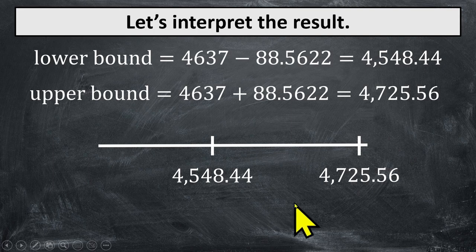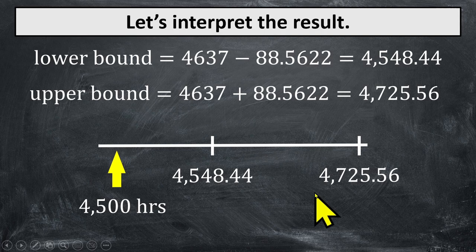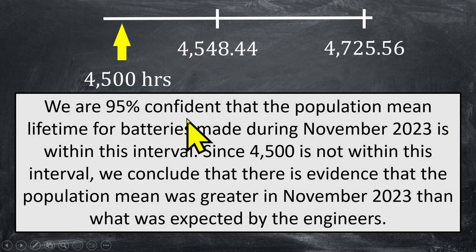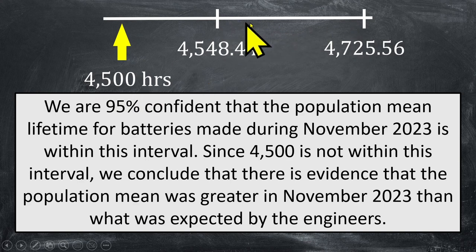Let's interpret. Here's a picture of our confidence interval. The engineers claim the mean lifetime of the battery is 4,500 hours, but this value falls outside the confidence interval. We are 95% confident that the population mean lifetime for batteries made during November is within this interval. Since 4,500 is not within this interval, we conclude that there is evidence that the population mean was greater in November than what was expected by the engineers — the data indicates the true value is somewhere in this region, bigger than 4,500 hours.